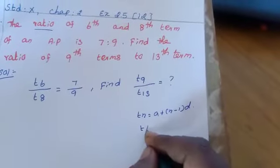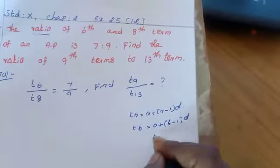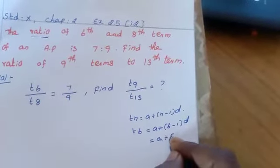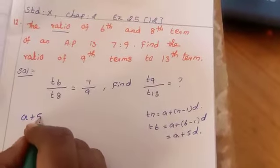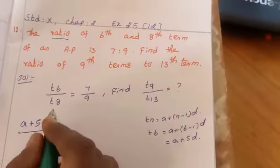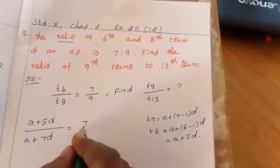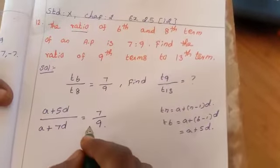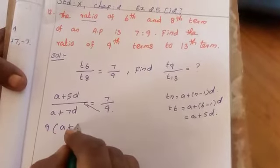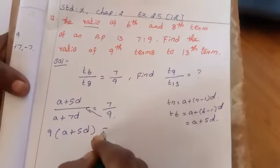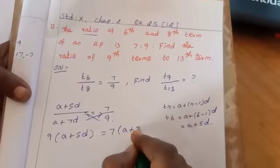Now apply T6 equal to A plus 6 minus 1 into D, that is A plus 5D. So T6 is A plus 5D divided by T8 is A plus 7D equal to 7 divided by 9. Now cross product: 9 into A plus 5D equal to 7 into A plus 7D.